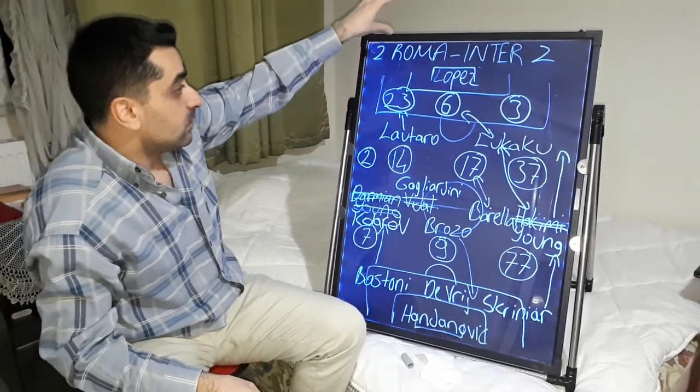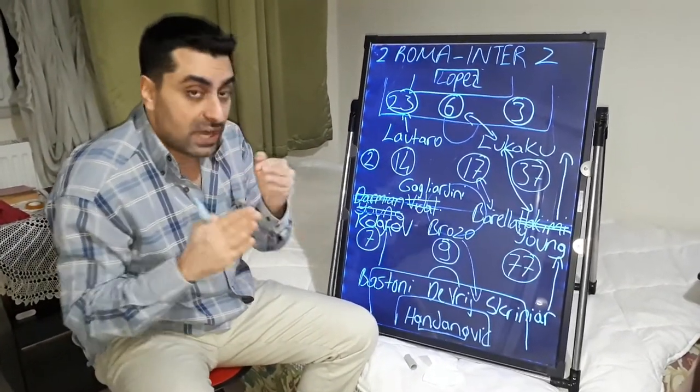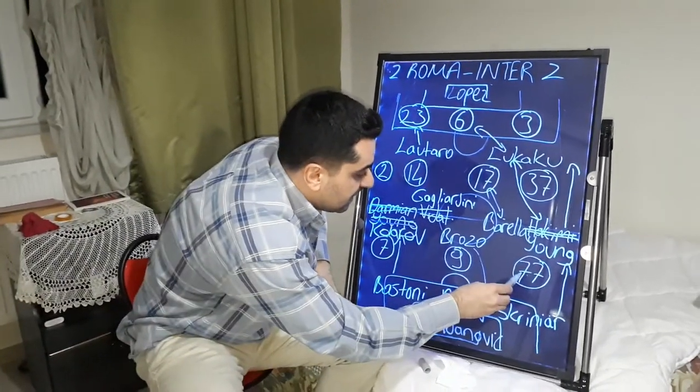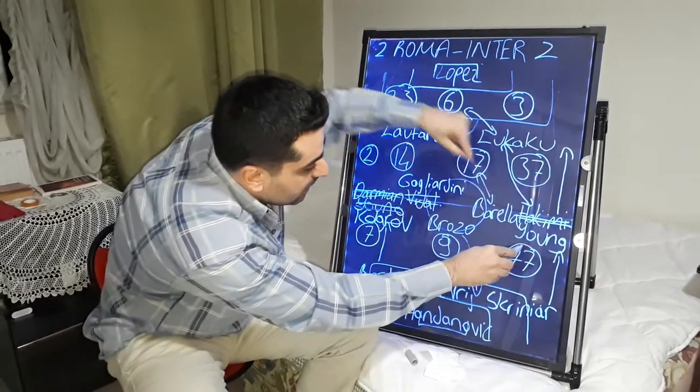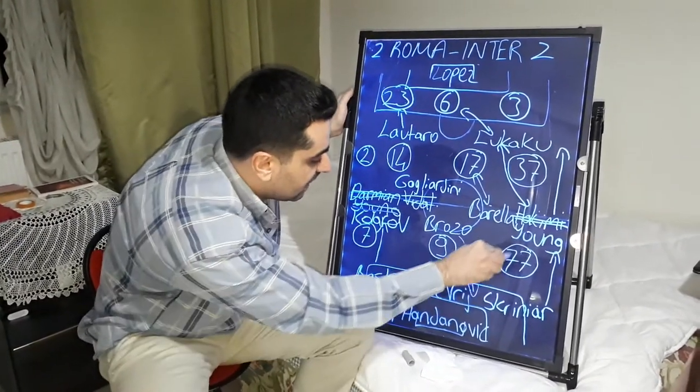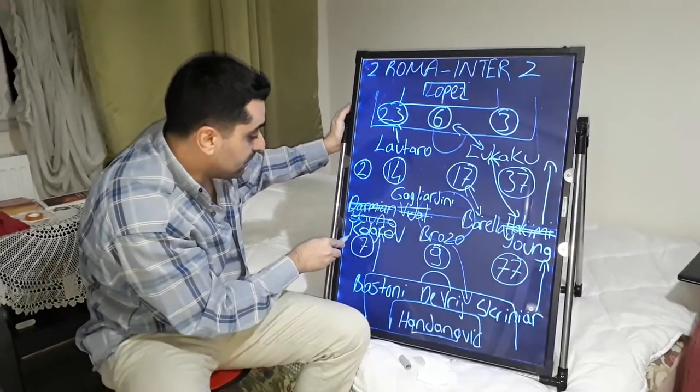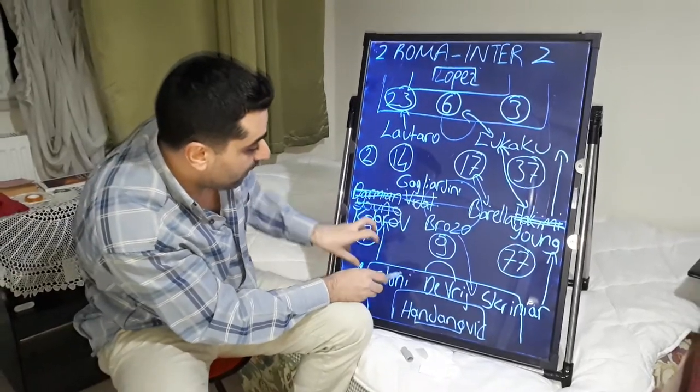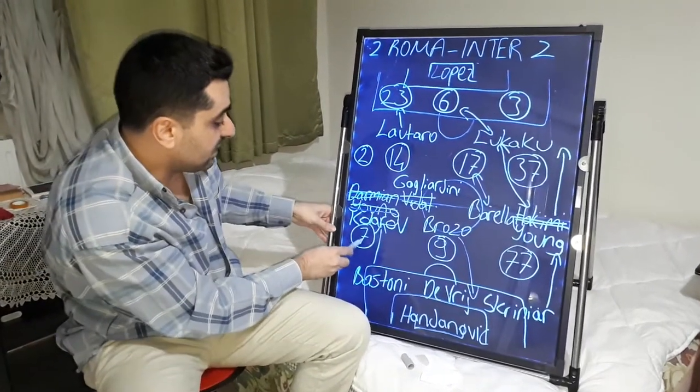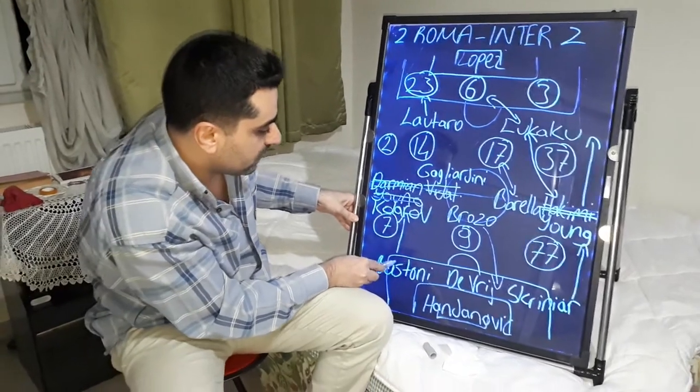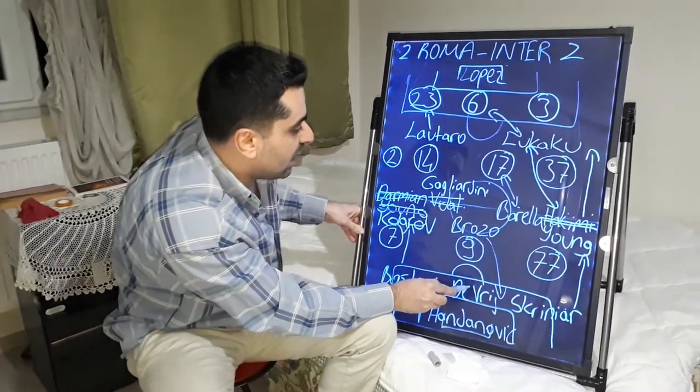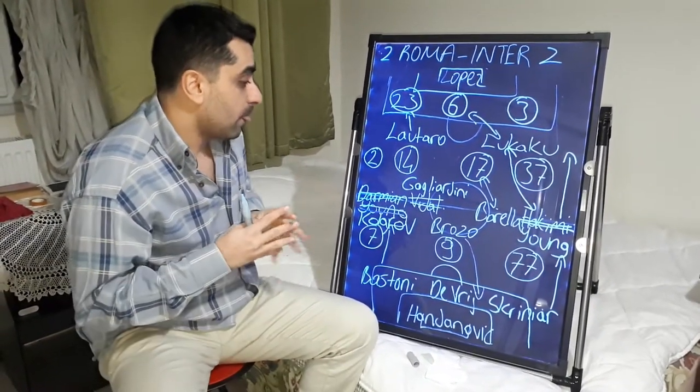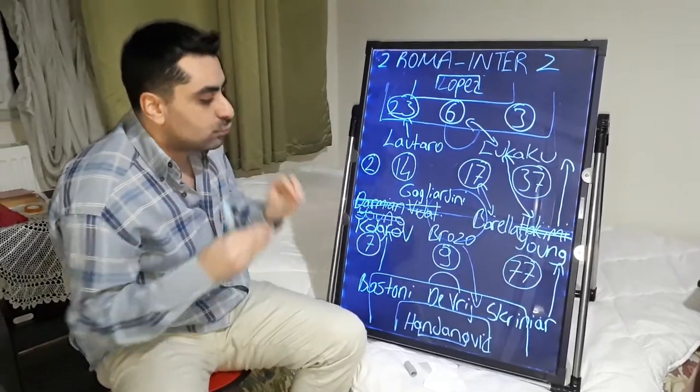But Roma made so much pressure to end of the game. And especially Mkhitaryan, sometimes Mkhitaryan came inside and got into the box. And sometimes Pellegrini got into the box of Inter. And Pellegrini made press on Bastoni and Dzeko made press on De Vrij. But it was a balanced game for these two teams. They deserved this draw result.